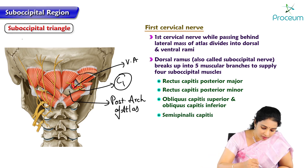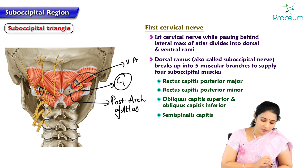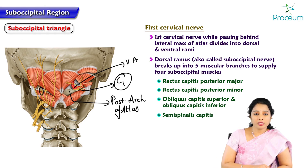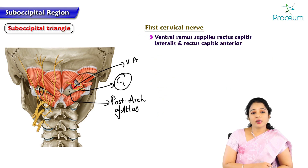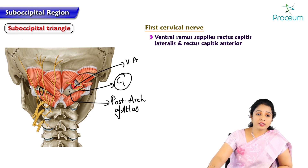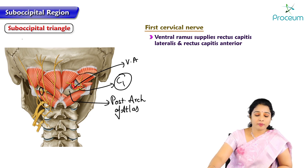Here in this image we can see the dorsal ramus of C1 splitting into five terminal branches. The ventral ramus supplies the rectus capitis lateralis and rectus capitis anterior.